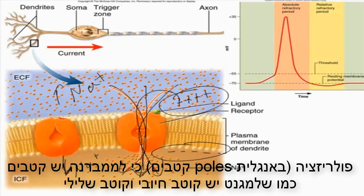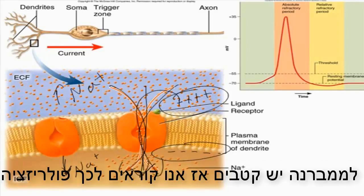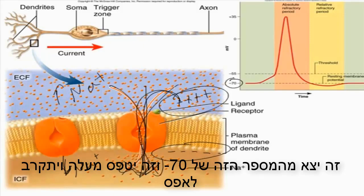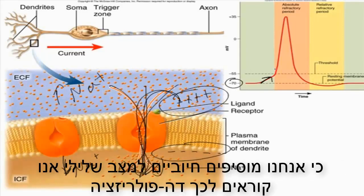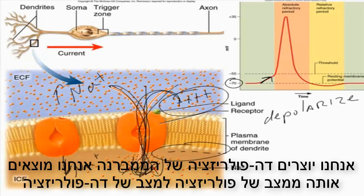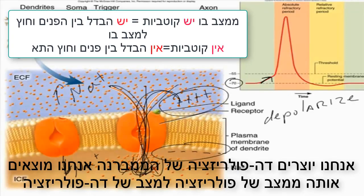The membrane is polarized because it has poles — just like a magnet has a positive pole and a negative pole. However, if you begin to put positive ions into the cell, you're going to change that potential. It's going to go from minus 70 and start going up closer to zero, because you're adding positives to a negative situation. We call that depolarization. If you open up sodium ion channels and allow positive sodium ions to rush into the cell, you depolarize the membrane — taking it from a polarized state toward a non-polarized state.